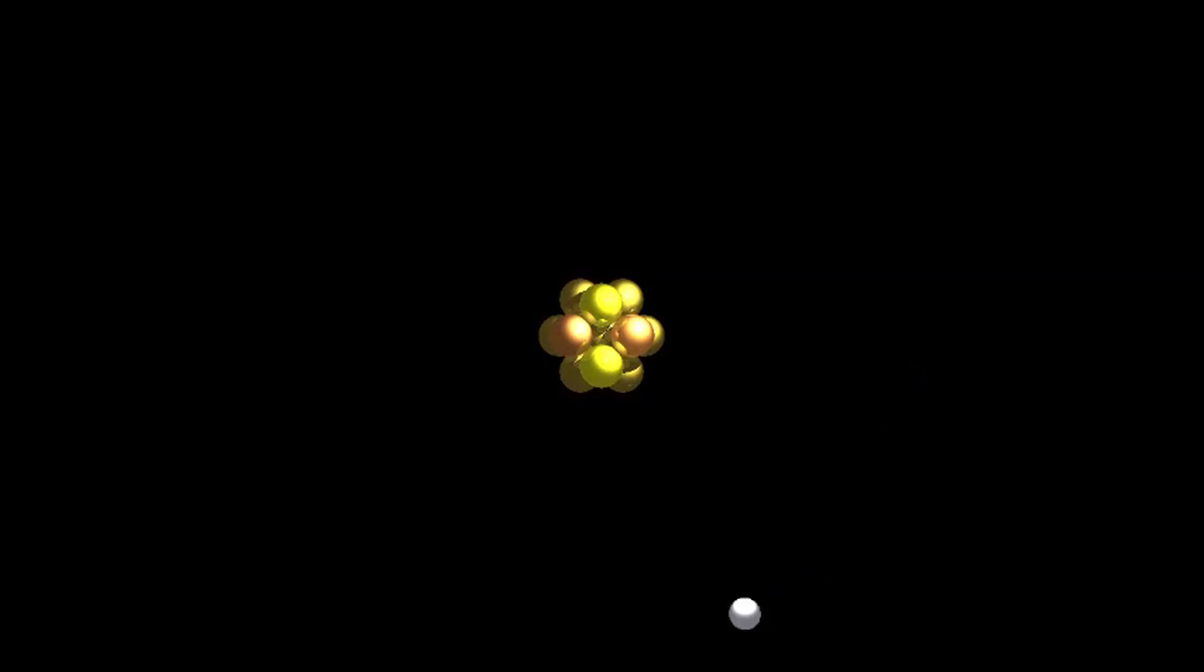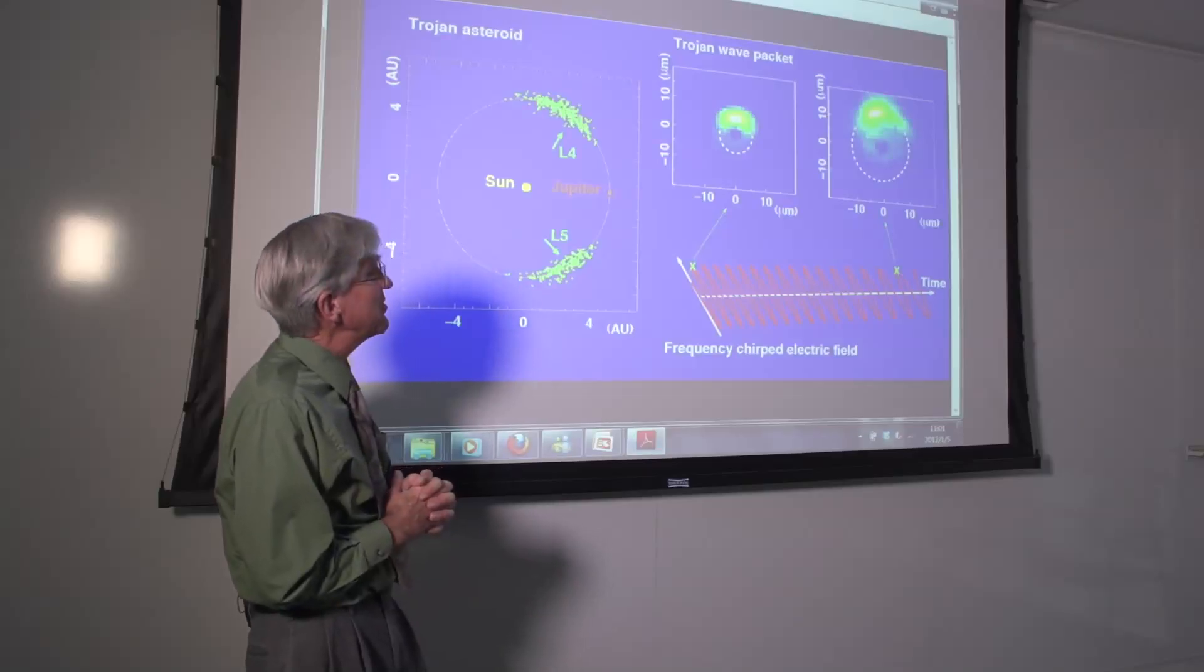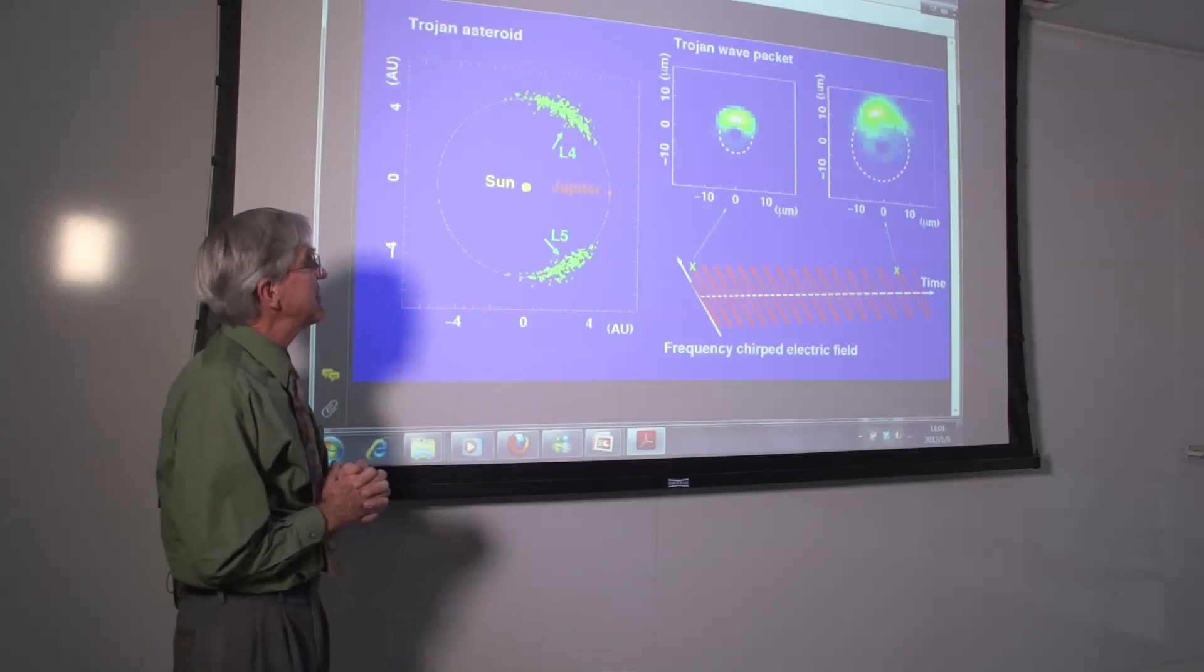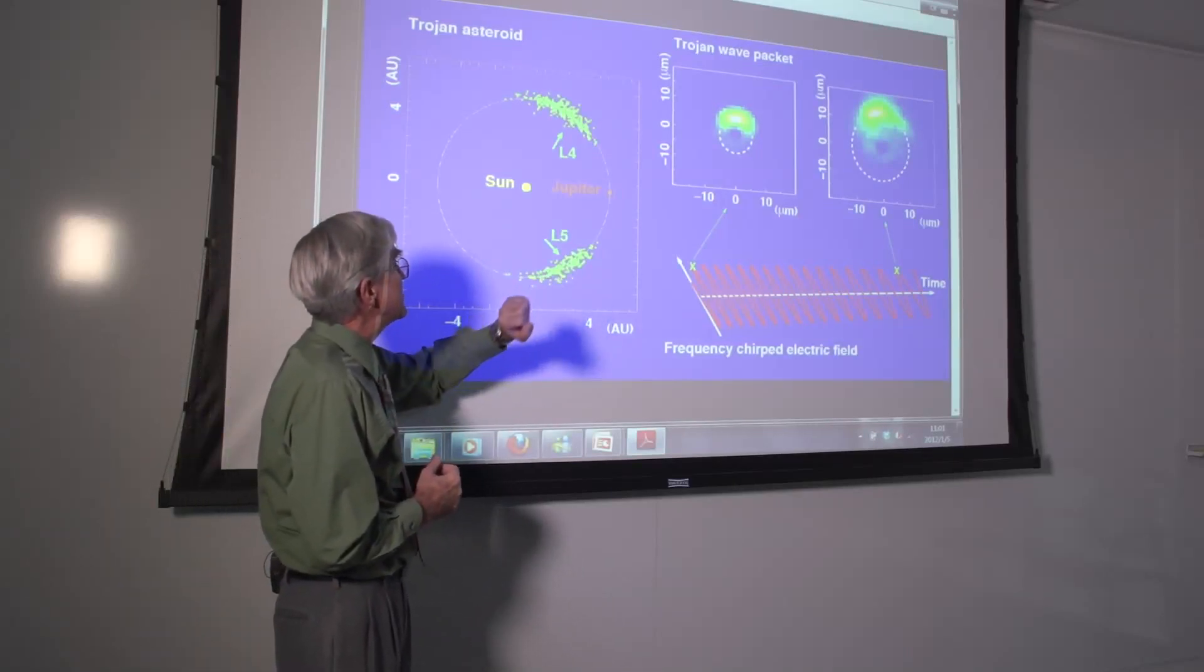Such atoms behave much as a classical system, and using them, it has been possible to reproduce in atoms effects that are seen in the solar system. In particular, we've been able to create electronic wave packets whose behavior mimics that of the Trojan asteroids.